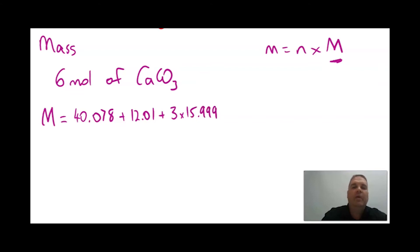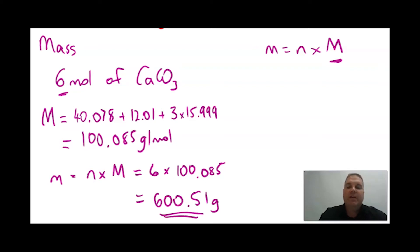When you add all those together you get a molar mass of 100.085 grams per mole. Then to calculate the mass very simply you do number of moles times molar mass. So we've got 6 moles, we multiply that by the molar mass of 100.085 and you get a mass of 600.51 grams. So if we had 6 moles of calcium carbonate, that is equivalent to 600.51 grams or just over half a kilo. Now we're going to look at another one.